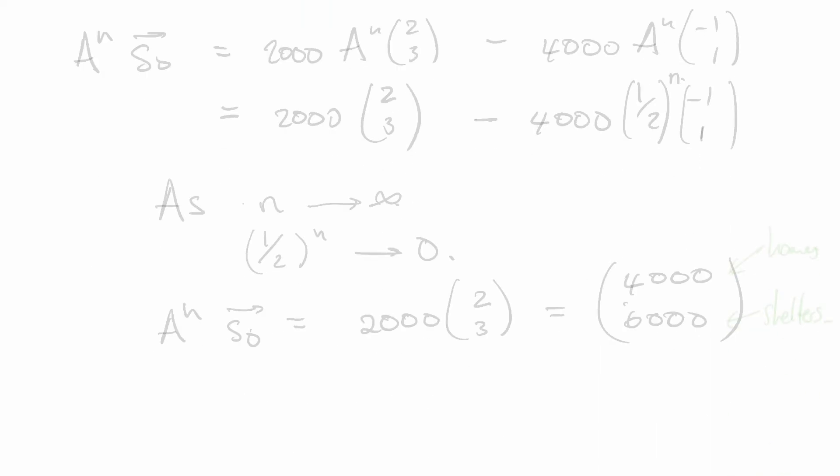Let's see what this allows us to do. After n years the situation is going to be A^n times our initial state vector. We're just going to multiply through by A^n. Our scalars can come in front. And here we've expressed S₀, our initial state vector in terms of our second basis. We know that A times the vector (2,3) is just (2,3). So it doesn't matter how many times we multiply by A. We're just going to get the vector (2,3).